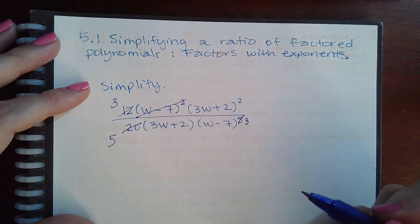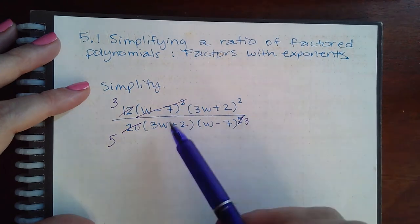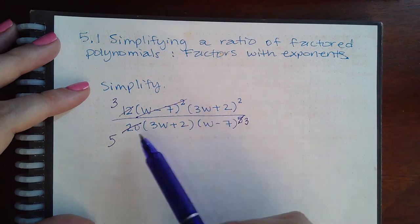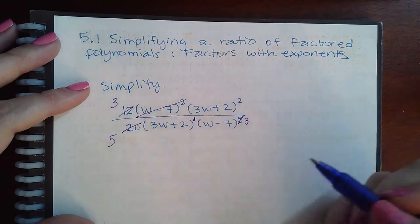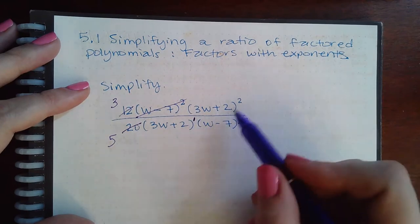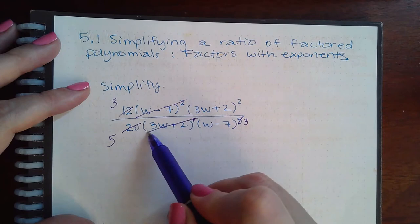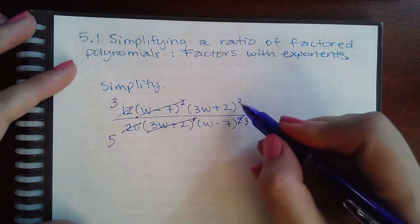Here I have a three w plus two factor and a three w plus two factor, but this exponent is an invisible one and you can only go with the lowest exponent. So I can only take out three w plus two to the power one. If I take out a power one that leaves me still with the power one.